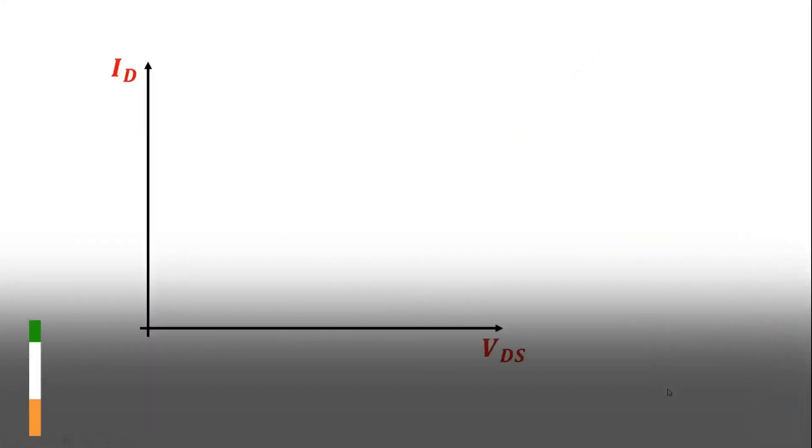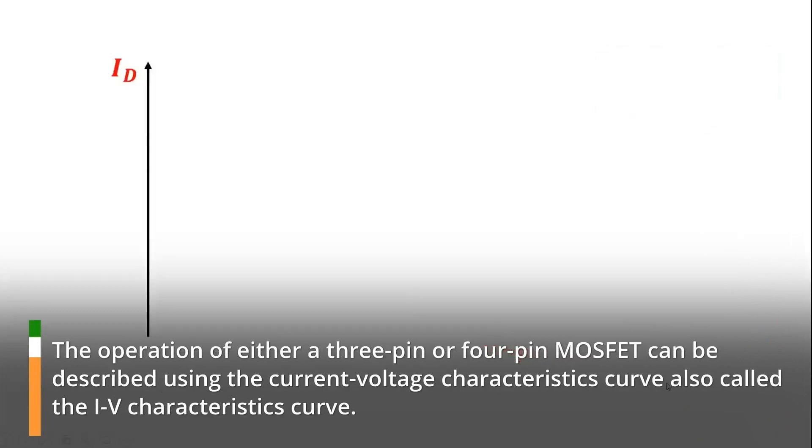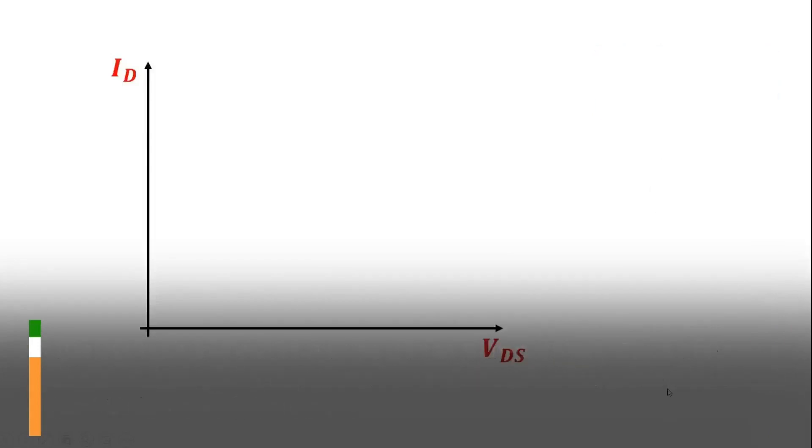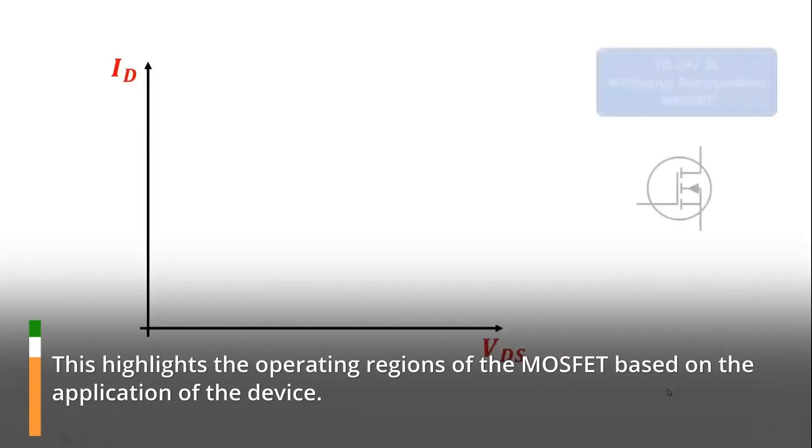The operation of either a three-pin or four-pin MOSFET can be described using the current voltage characteristics curve also called the IV characteristics curve. This highlights the operating regions of the MOSFET based on the application of the device.